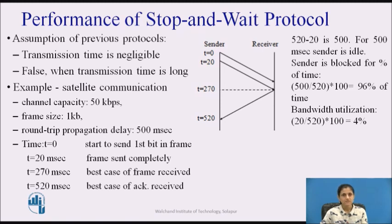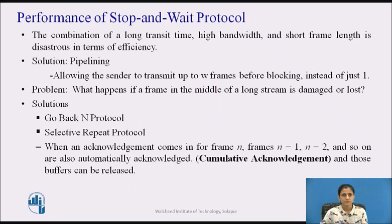520 minus 20 is 500 ms, so the sender is idle for 500 ms. The sender is blocked for 500/520 × 100 = 96% of the time. Bandwidth utilization is 20/520 × 100 = 4%. So only 4% of the available bandwidth was used. Clearly, the combination of a long transit time, high bandwidth, and short frame length is disastrous in terms of efficiency.